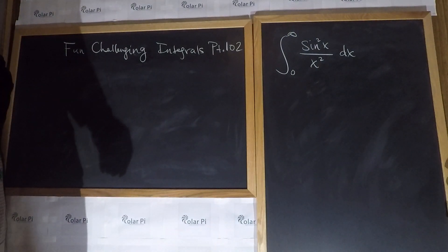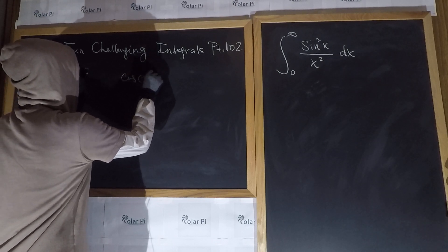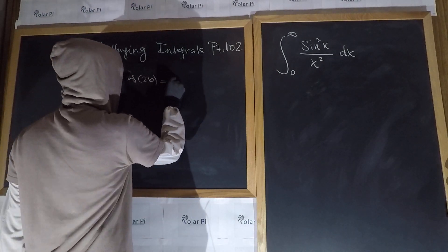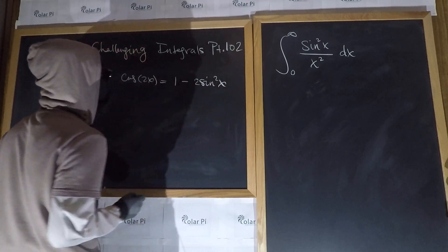to start, recall that one version of the cosine double angle formula says that cosine 2x is equal to 1 minus 2 sine squared x.